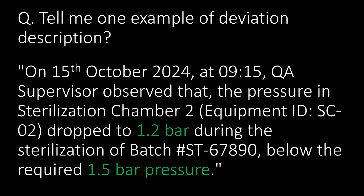A very important question: give one example of a deviation description. On 15th October 2024 at 9:15, QA supervisor observed that the pressure in sterilization chamber 2 (equipment ID: SC-02) dropped to 1.2 bar during the sterilization of batch number ST-67890, below the required 1.5 bar pressure.